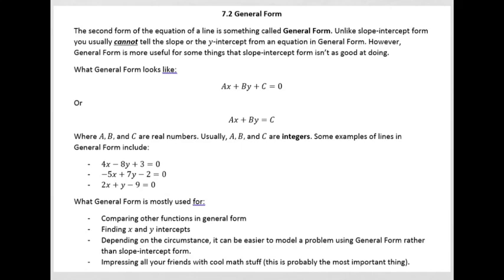Some examples of lines in general form include this guy right here: 4x minus 8y plus 3. In this example, A is 4, B is negative 8, C is 3.